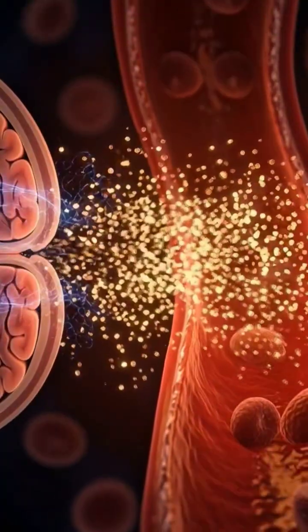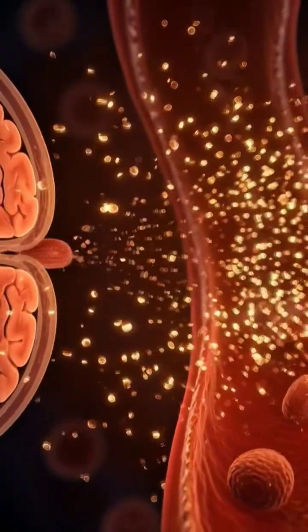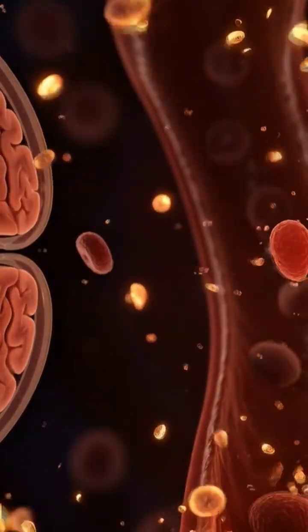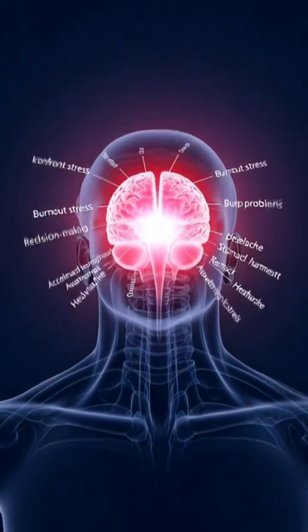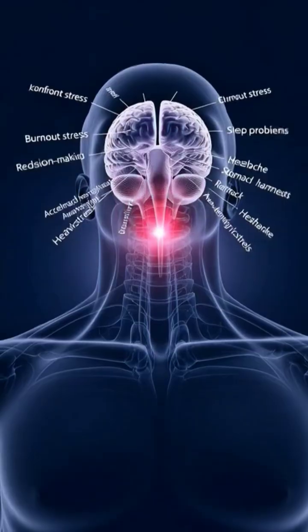It sends danger signals throughout your brain, triggering the release of cortisol, your primary stress hormone. As cortisol levels rise, your thinking center, the prefrontal cortex, starts to weaken.